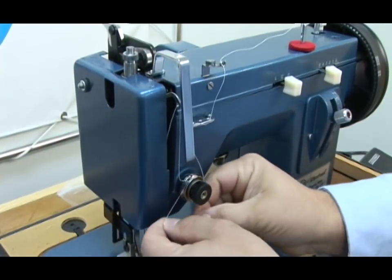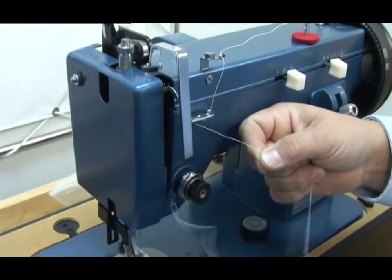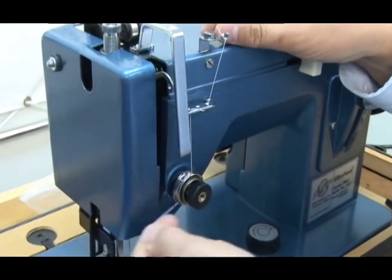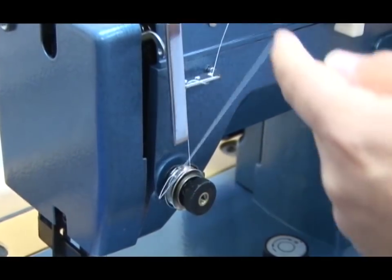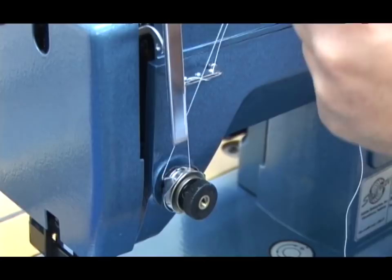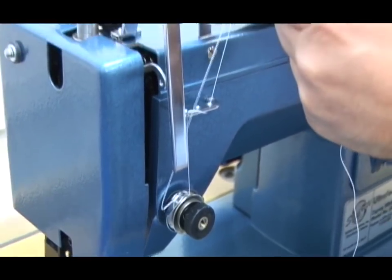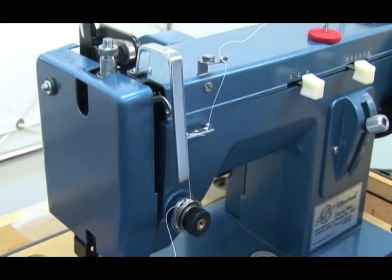What that means is that you should obviously be threading your machine when the presser foot is up so that you can get the thread pulled deeply between the tension plates. And indeed, I will often tell you pull on the two threads to make sure that it's pulled all the way to the core of the tension post.